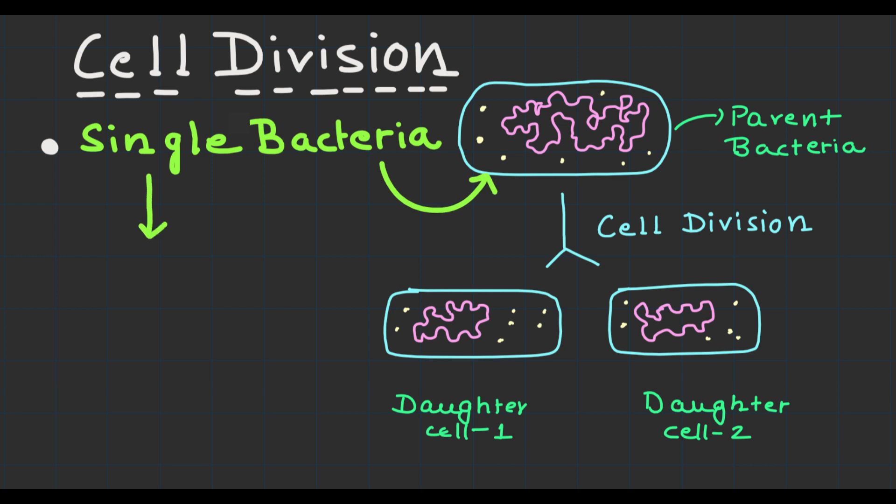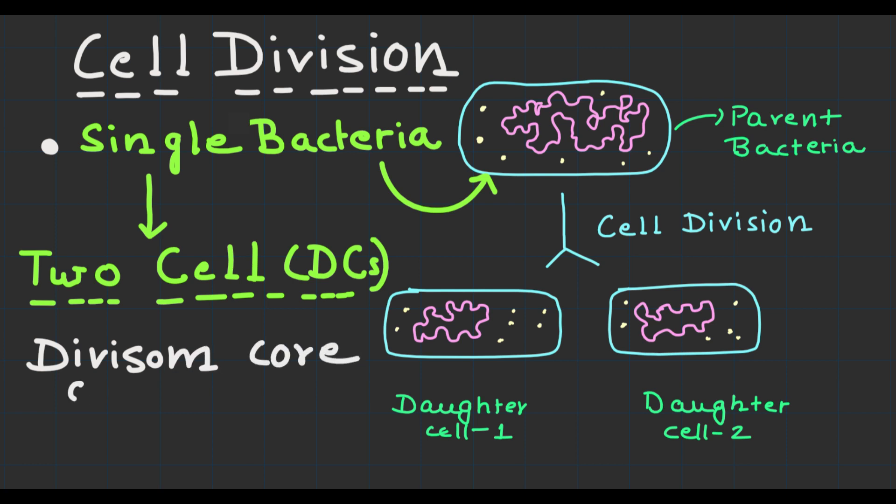All right, without any delay let's get started. Bacterial cell division is a remarkable process that allows a single bacterium to divide into two daughter cells. At the heart of this process lies the bacterial division core complex. Think of it as the command center for cell division. The complex is made up of several key proteins, each with its own crucial function.